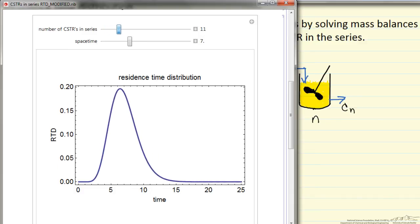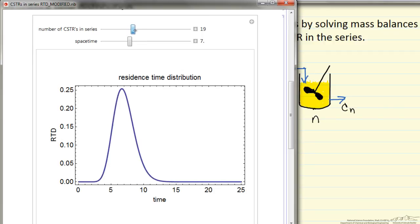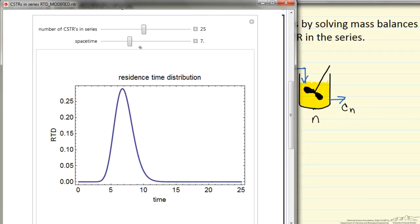you'll notice what happens is this starts to get closer to the space time where the maximum occurs, and the peak gets narrower. So notice the scale is changing on the y-axis as this gets narrower.